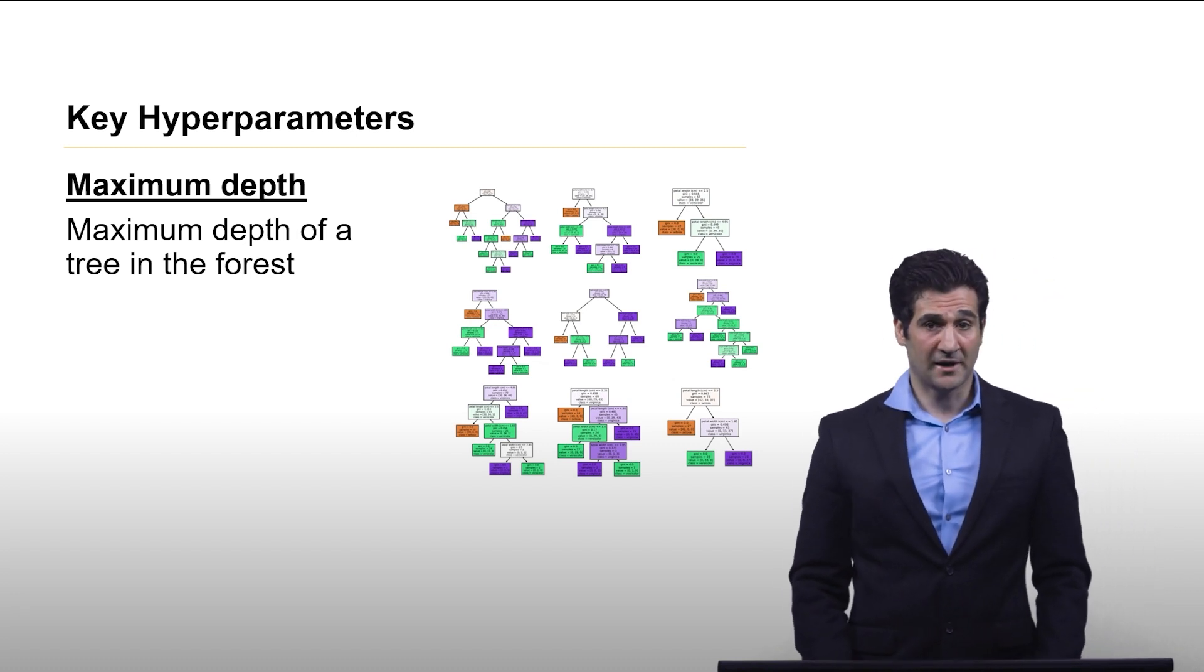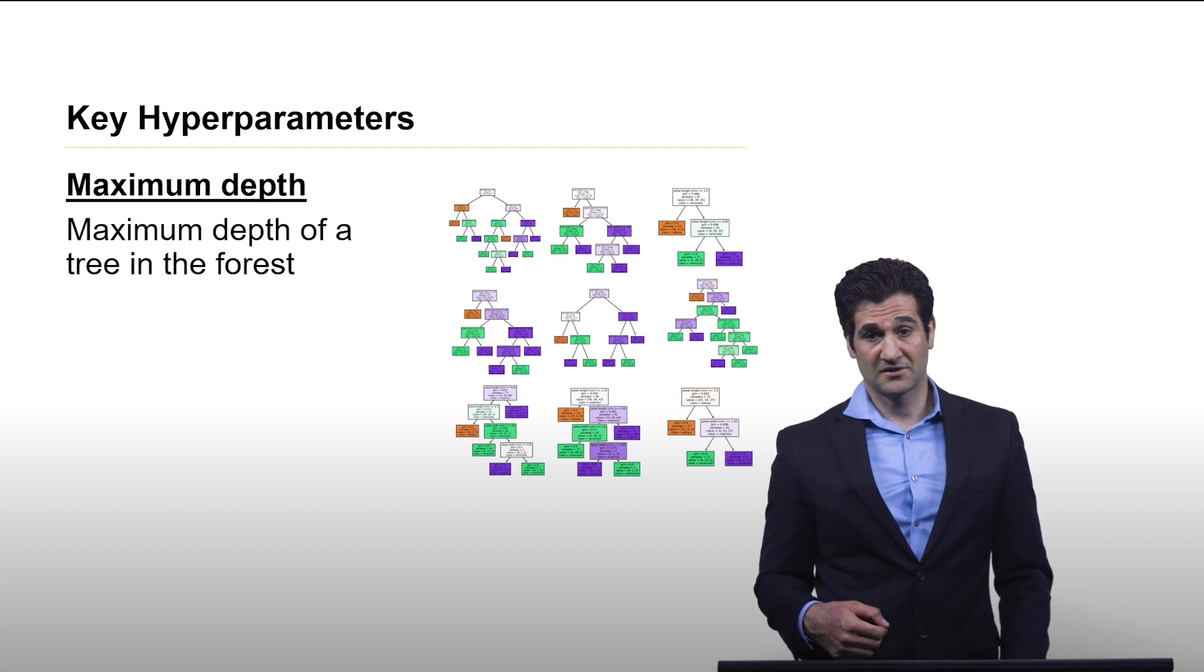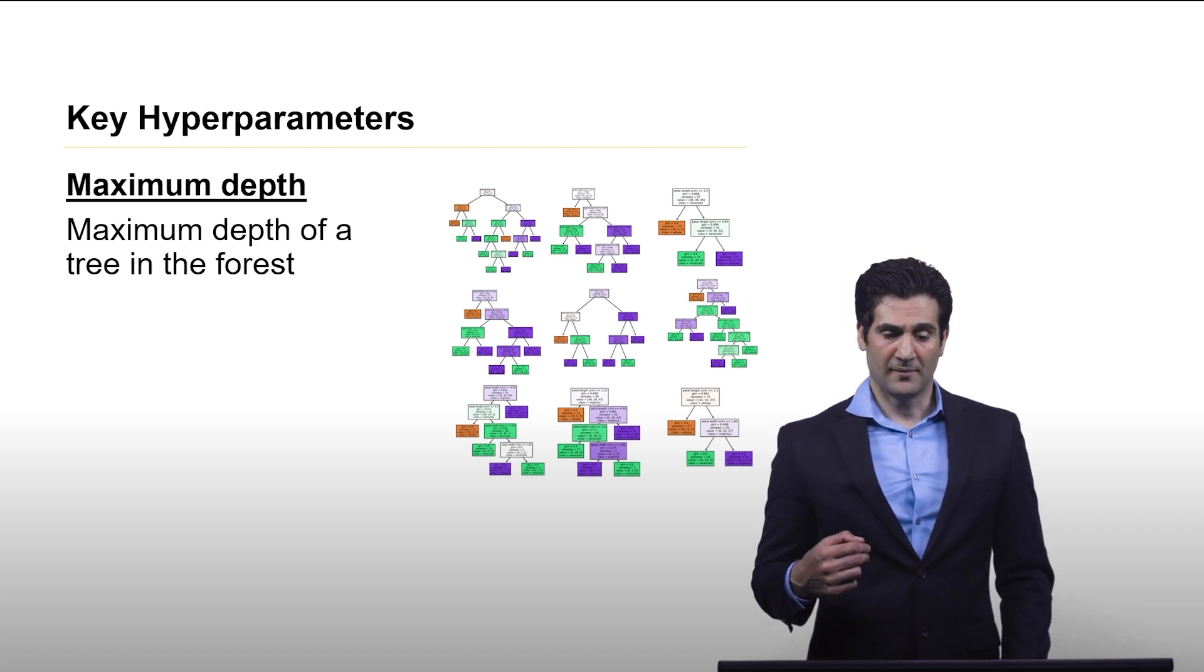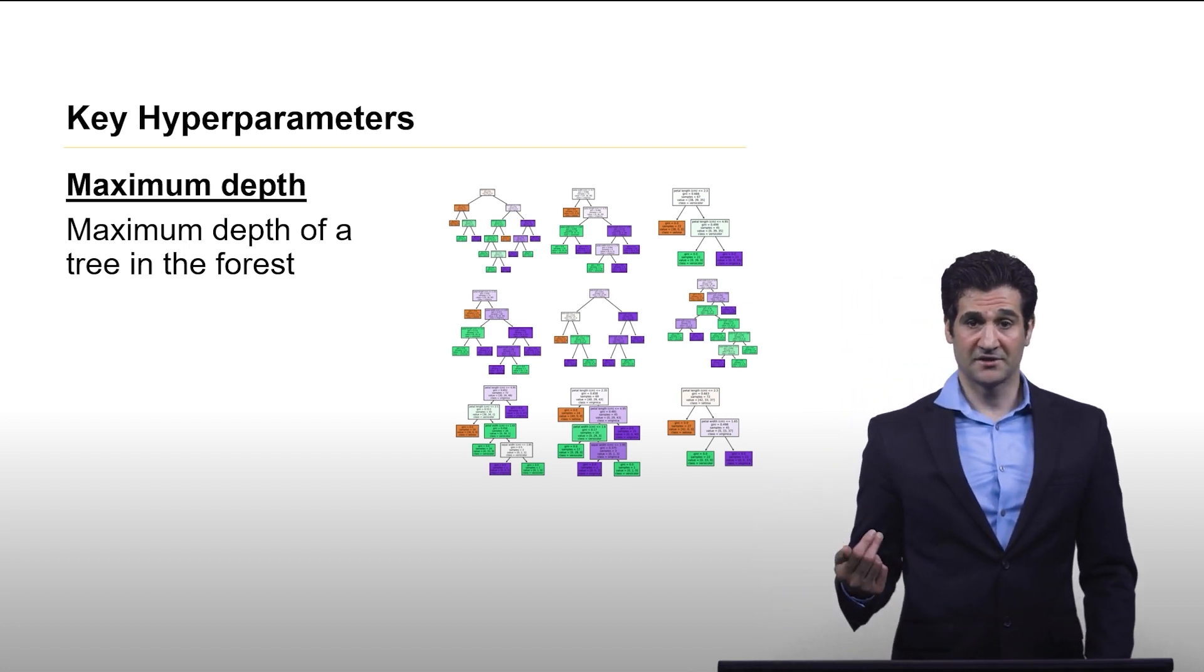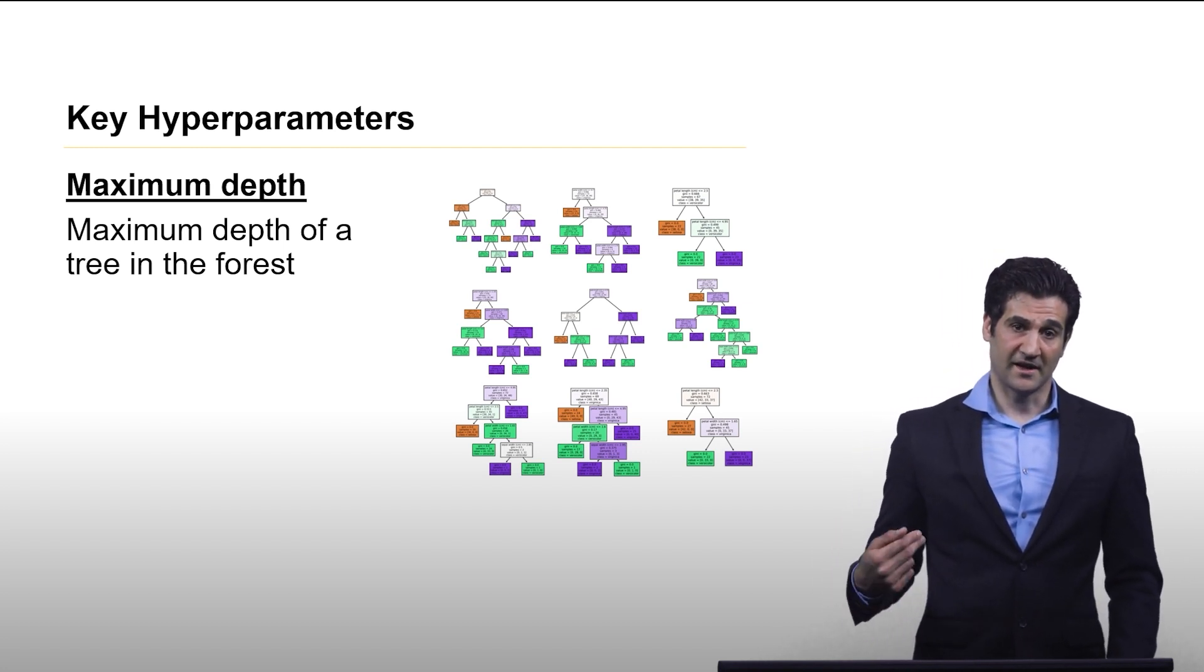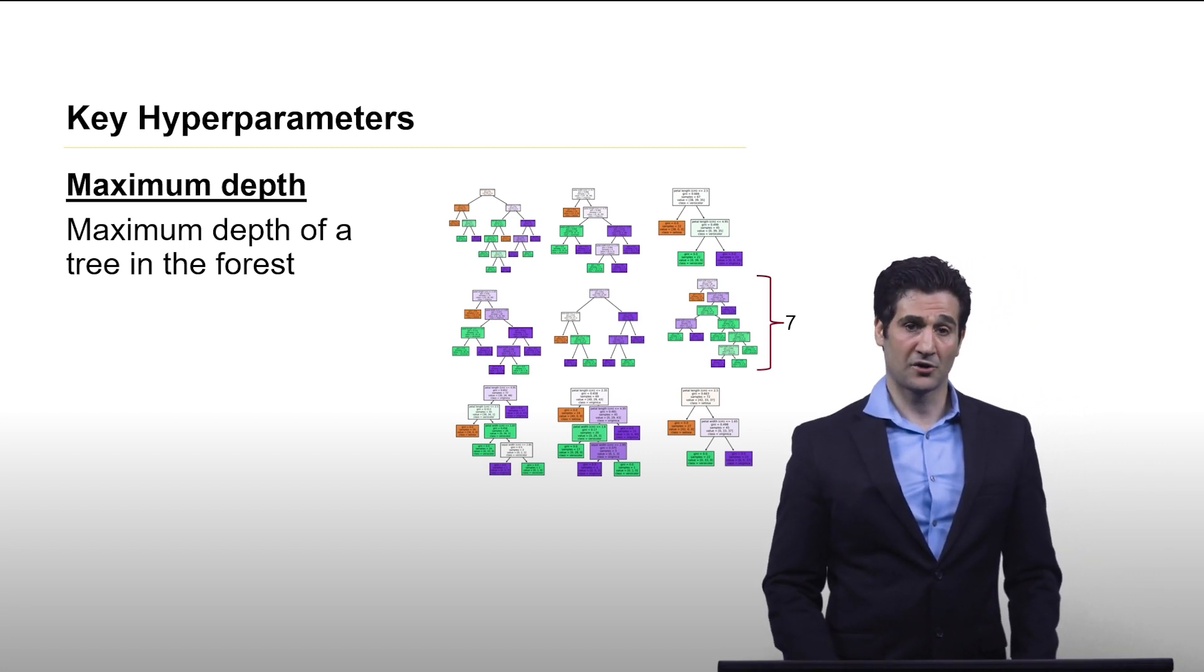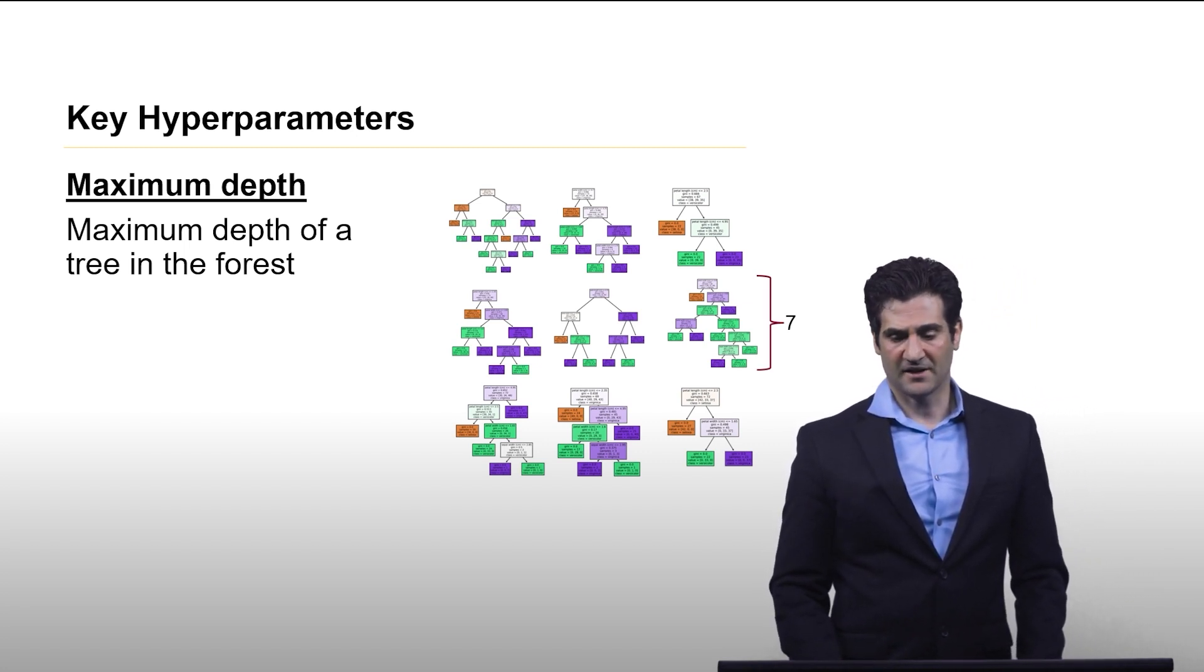The next is the maximum depth. With a single decision tree, that's the depth of that single tree. The maximum depth in a random forest is the maximum depth of the tree that is deepest. In this case, it's the fourth tree as you see, and it has a depth of seven.